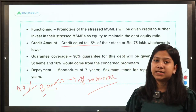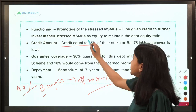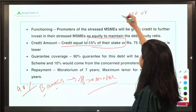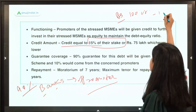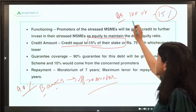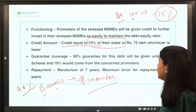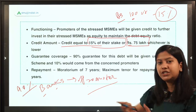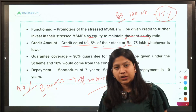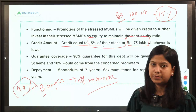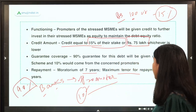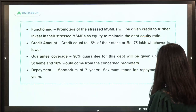The promoters will get credit equal to 15% of their stake in the company — for example, if they hold Rs. 100 crore worth of stake in an MSME, then 15% of that amount is given as credit. However, this amount must not exceed the maximum ceiling of Rs. 75 lakh; whichever is lower — 15% or Rs. 75 lakh — is given. The guarantee is 90%, and the remaining 10% is the borrower's responsibility. The moratorium is seven years and the tenor of repayment is 10 years.